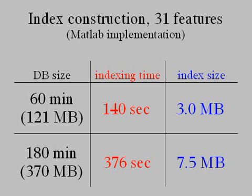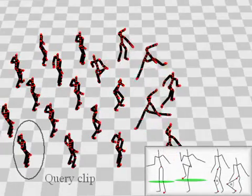Our retrieval is based on an index structure. As a major advantage of our approach, this index can be computed and stored in time and space linear in the size of the database, and not quadratic as for previous approaches. For example, indexing a database consisting of more than a million frames, equivalent to 180 minutes of motion data, took roughly 6 minutes and 7.5 megabytes of storage.